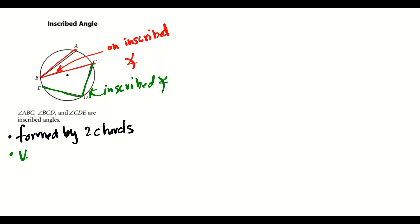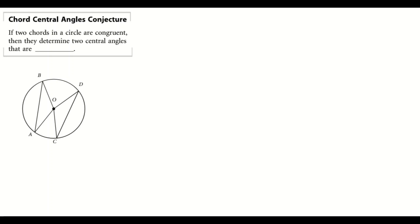One thing we know about inscribed angles is that the vertex is on the circle. Vertex D is on the circumference of the circle, and vertex B is also on the circumference of the circle.